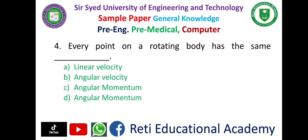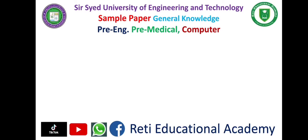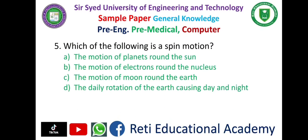Question number 4: Every point on a rotating body has the same dash — A. Linear velocity, B. Angular velocity, C. Angular momentum, D. Angular momentum. The correct answer is B: Angular velocity.